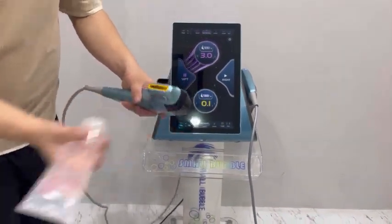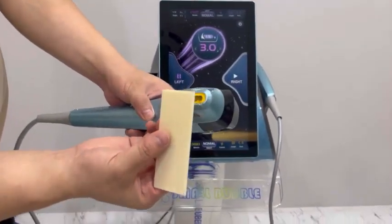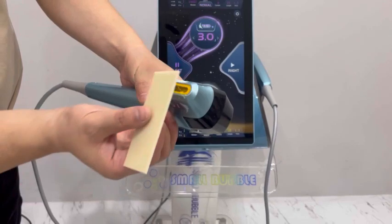Put some gel on the cartridge. Now we test on the ball. Press the handle button when working.